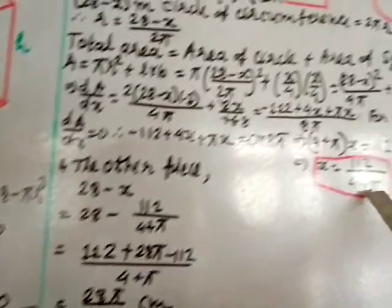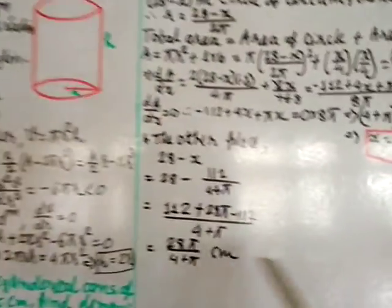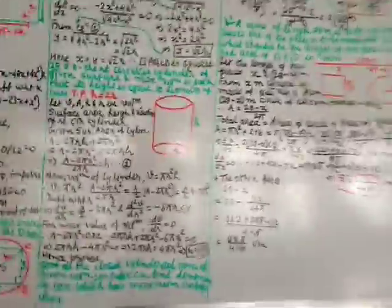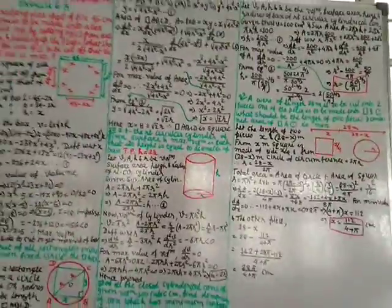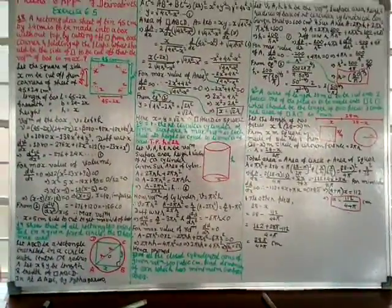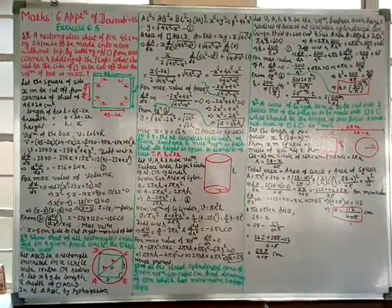So one piece is 112/(4 + π) cm and the other is 28π/(4 + π) cm. These are the two lengths that minimise the combined area of the square and circle. We will do the remaining questions in the next class.